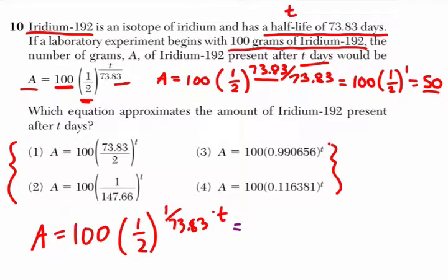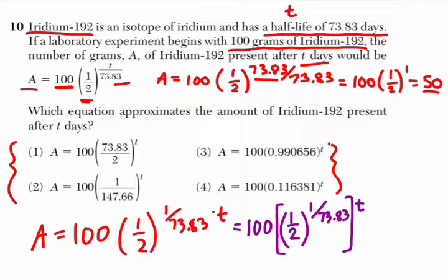In other words, you can say that this equals 100 times one-half to the power of 1 over 73.83. You can deal with that part first. I'll put that in brackets. And then you can apply the T exponent, right? Because here the law of exponents says you can multiply these two exponents together, and it would be the same thing that we had before. So what we've got to do is find out what this equals right here. What is one-half to the 1 over 73.83?